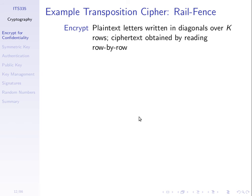A transposition cipher rearranges letters rather than replacing them from the alphabet. We take the plain text and move the letters inside the plain text. A simple one is called the rail fence cipher, where we have a plain text message and we write it over K rows — where K is the key, maybe two rows, three rows or more depending on the length. The cipher text is obtained by reading row by row.